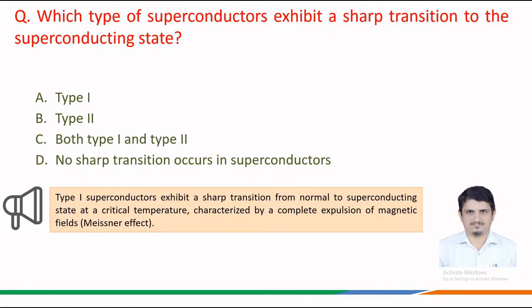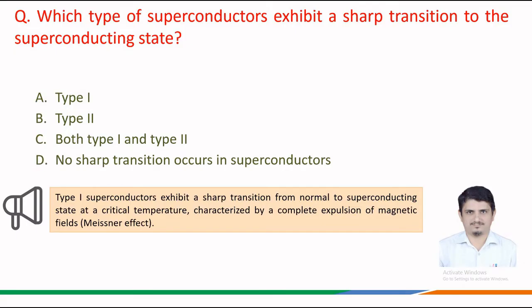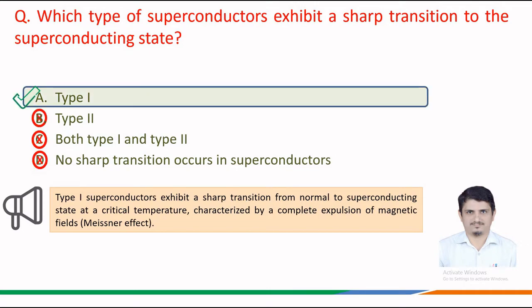To answer this question correctly, we may recall that type 1 superconductors exhibit a sharp transition from normal to superconducting state at a critical temperature. It is characterized by a complete expulsion of magnetic fields, famously known as the Meissner effect. Therefore, the correct answer is option a — type 1 superconductors exhibit a sharp transition to the superconducting state.